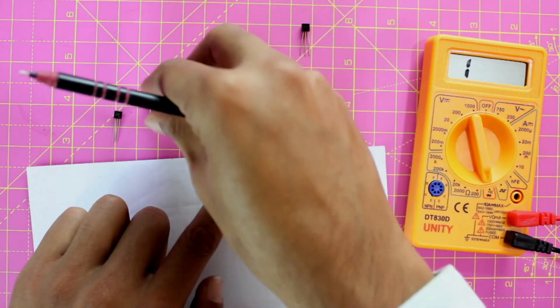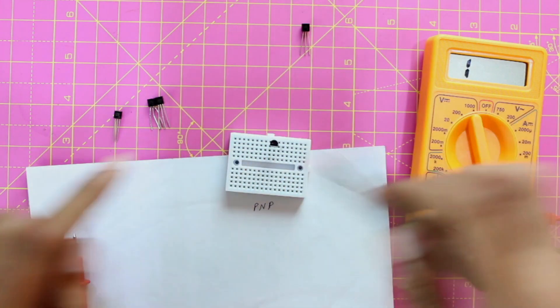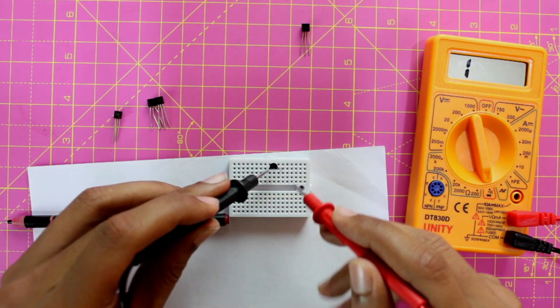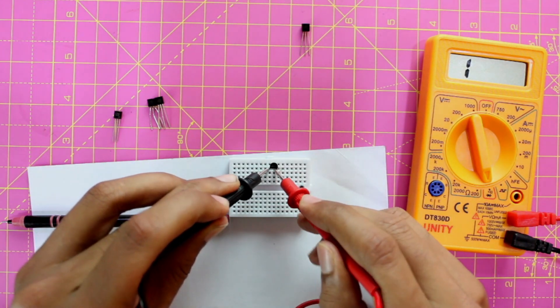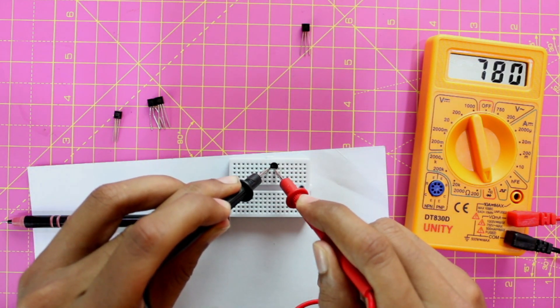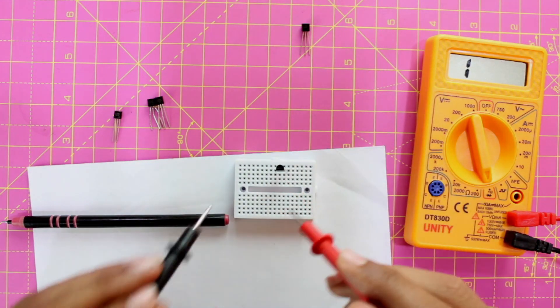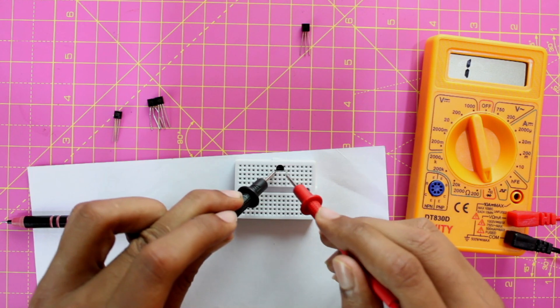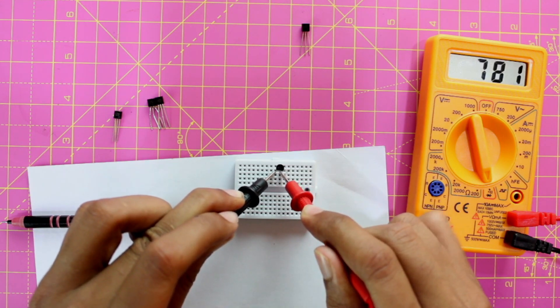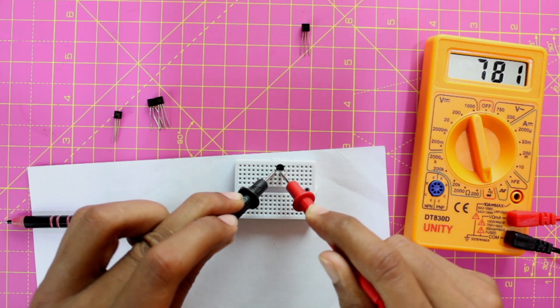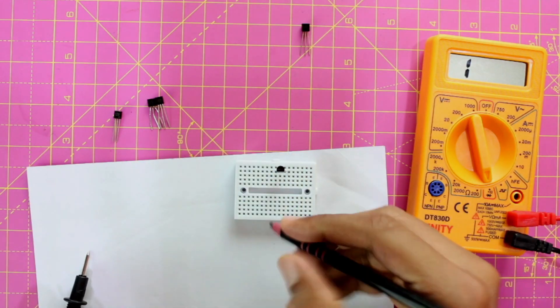Let's do it again for another transistor. Again let's start randomly probing. Let me keep my black first and red next. Okay, now I am getting a voltage drop. So now the first pin is N and the second pin is P. Let me write it down.